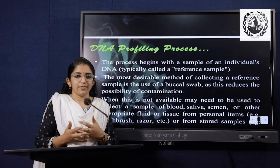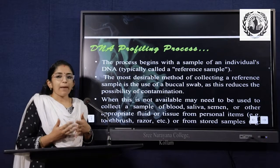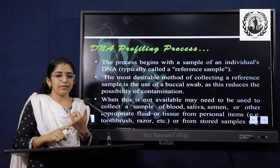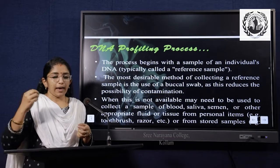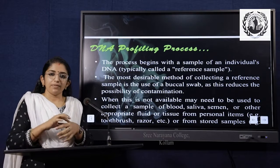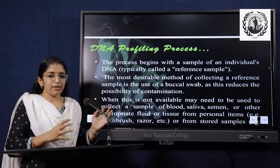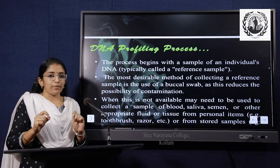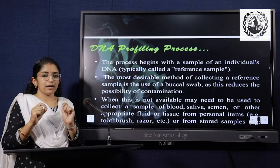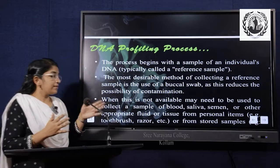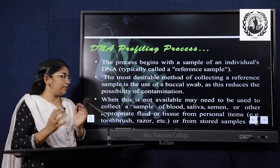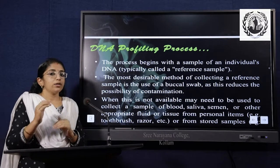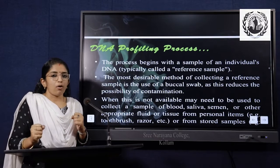The DNA profiling process begins with a sample of an individual's DNA, typically called a reference sample. This reference sample may be blood, a smear, semen, hairs including the roots, nails, or skin. The most desirable method of collecting a reference sample is the use of a buccal swab. In the case of rape cases, vaginal swabs are collected, as this reduces the possibility of contamination. This process must be done in a non-contaminated way; otherwise, we cannot identify the victim or process the crime.